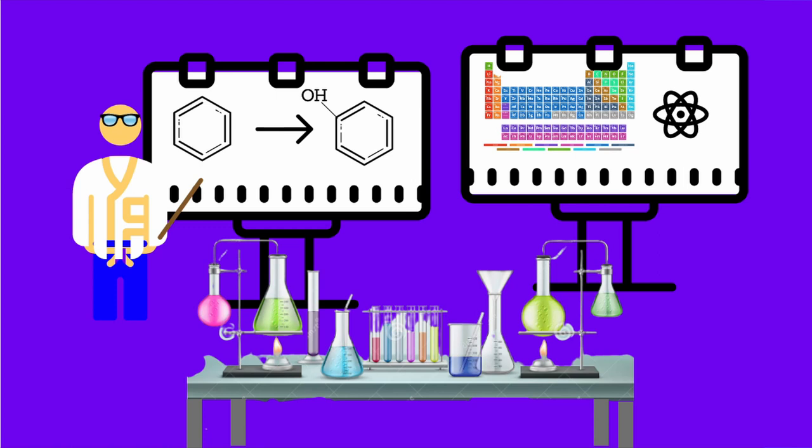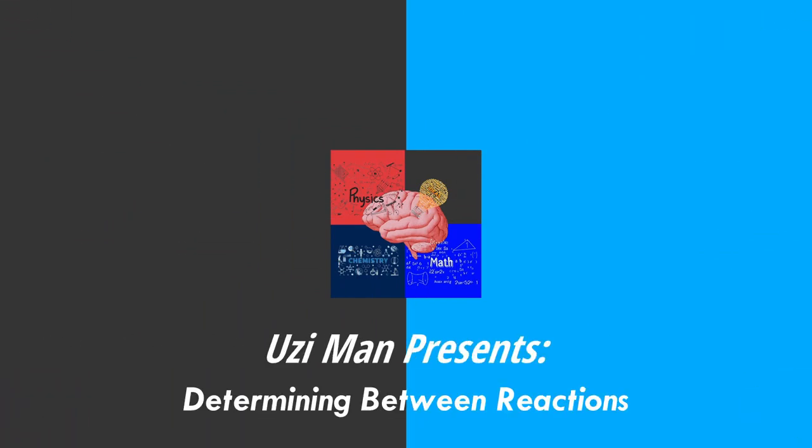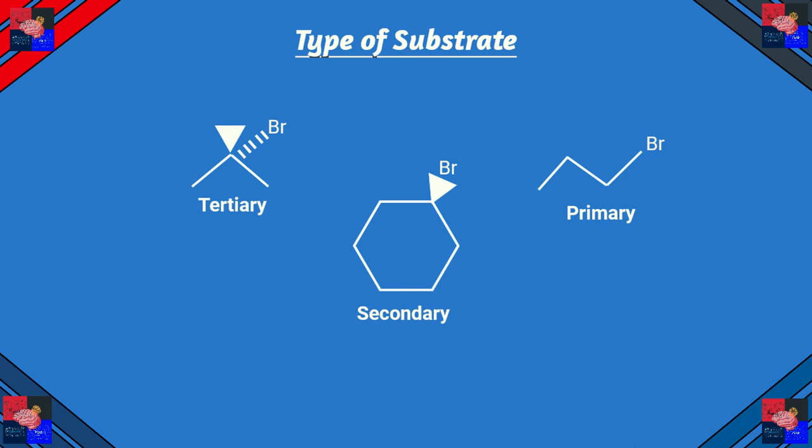Assalamu alaikum everyone. Today we are going to talk about determining between elimination reactions and substitution reactions. Before we predict what reaction will happen, we need to get a few things straight — mainly four things: the first is the type of substrate, the second is the nucleophile strength and leaving group ability, third is temperature, and fourth is steric hindrance. Let's go through them one by one.